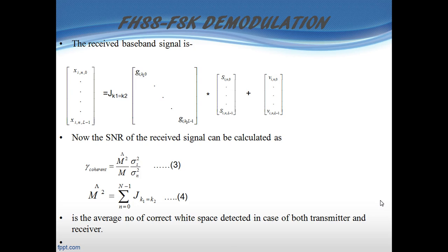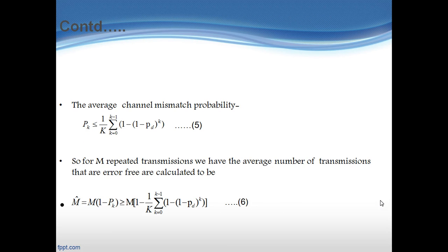For the frequency hopping spread spectrum demodulation, the received baseband signal is found using the given matrix. The SNR of the received signal can be calculated from equation 3, and equation 4 gives the average number of correct white spaces detected in case of both transmitter and receiver. The average channel mismatch probability is given by equation 5. For N repeated transmissions, the average number of error-free transmissions is denoted by equation 6.